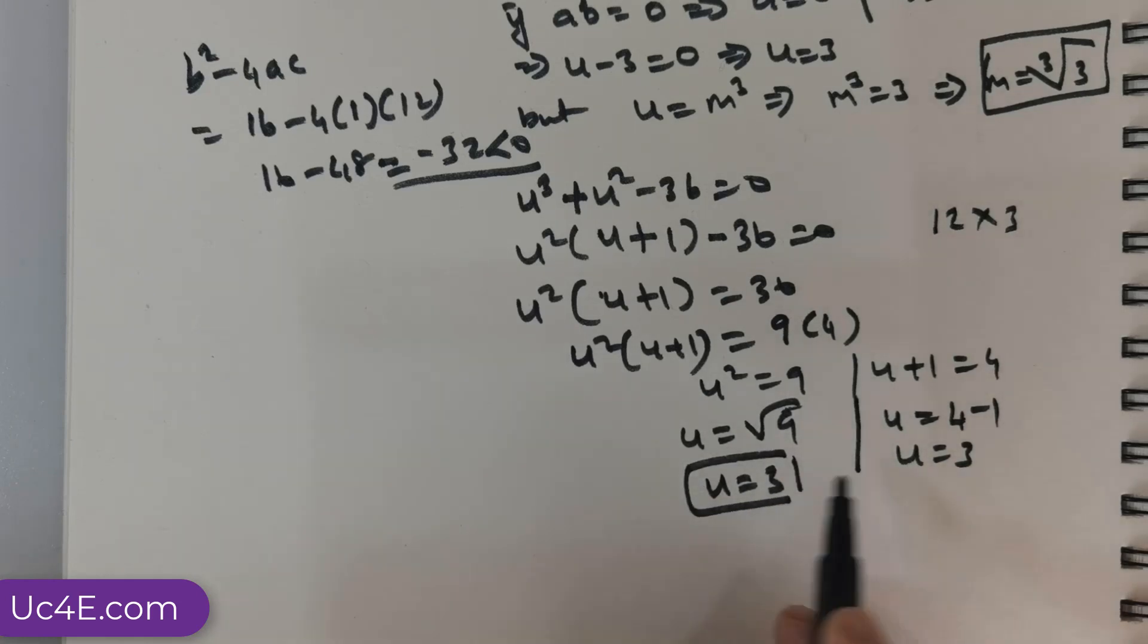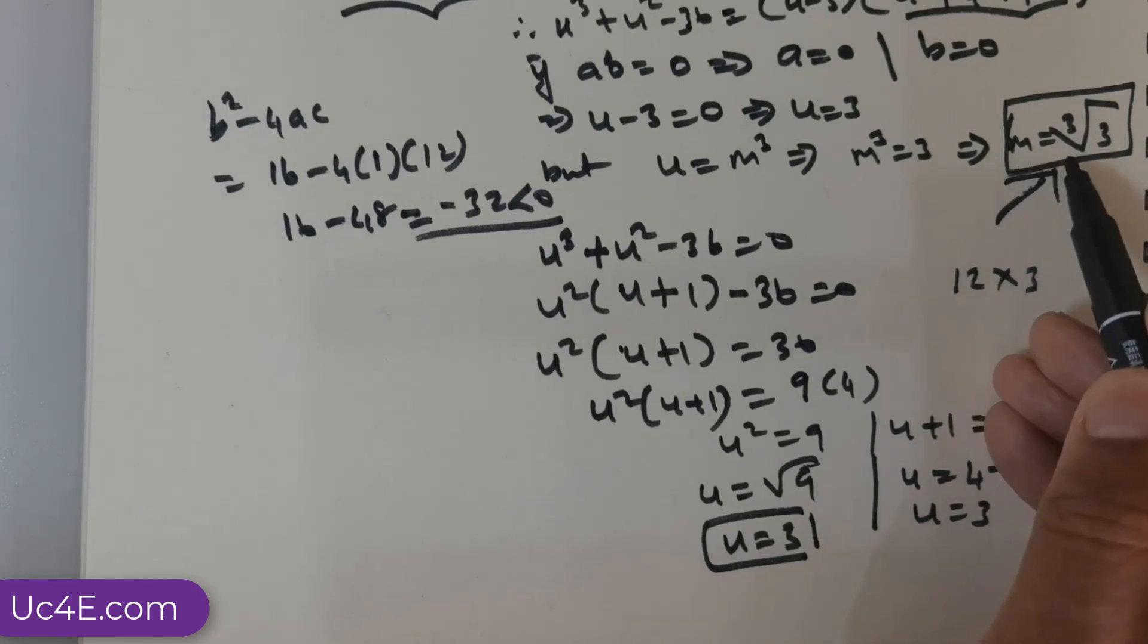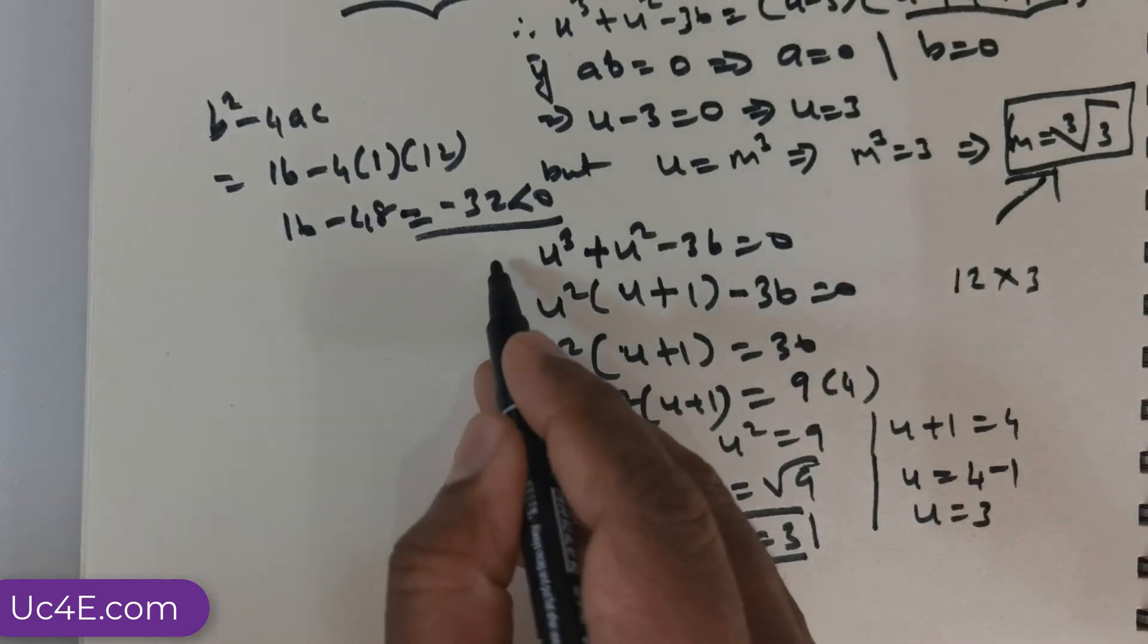So, we have got u = 3. So, thereby, we are actually getting the same quantity of m being equal to third root of 3. So, this is the next way.